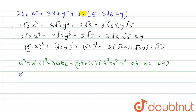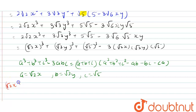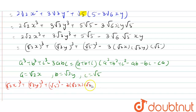So in our case, in place of a it is √2x, in place of b it is √3y, and in place of c it is √5. So this equals (√2x)³ + (√3y)³ + (√5)³ - 3·√2x·√3y·√5.